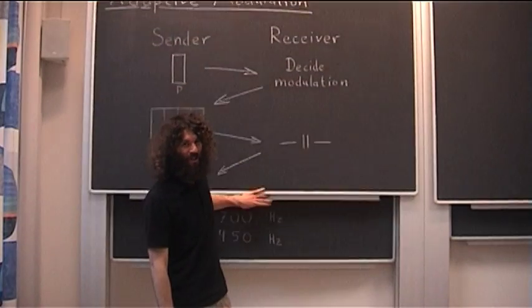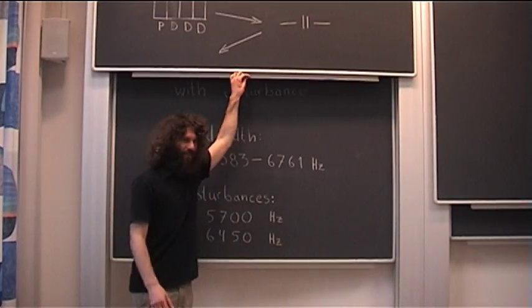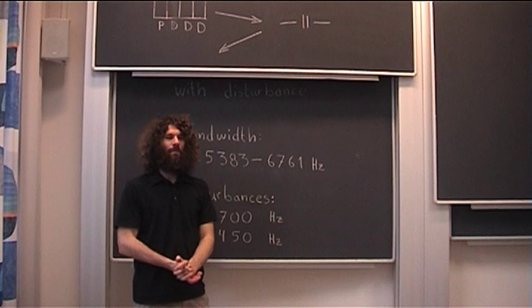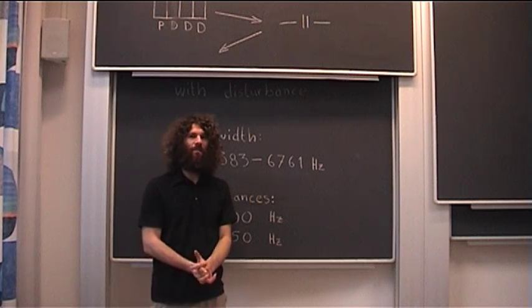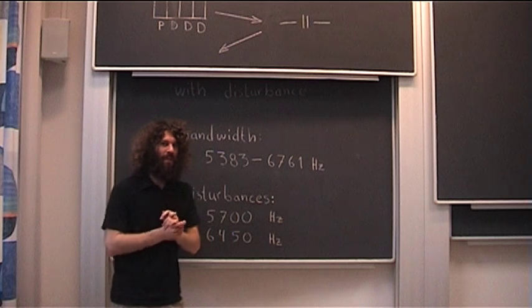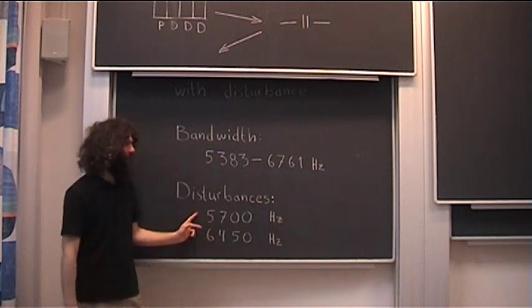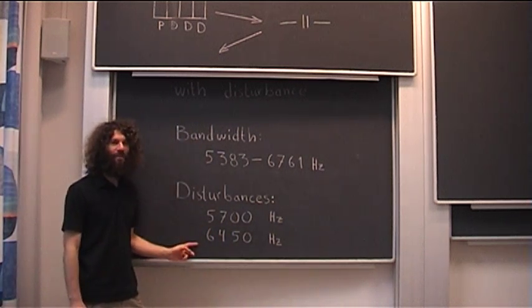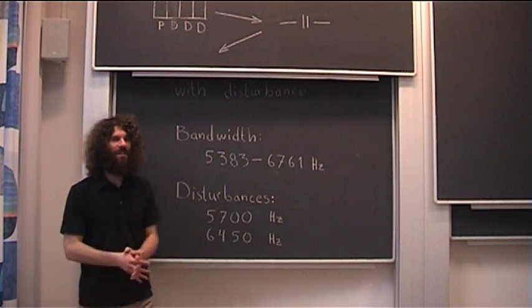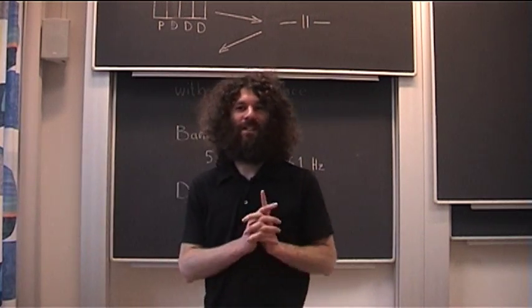Communication with disturbance. The frequency range we previously used is between 5,383 and 6,761 Hz. Now we're going to introduce disturbances at 5,700 and 6,450 Hz. This experiment will show you how the system adapts to this.